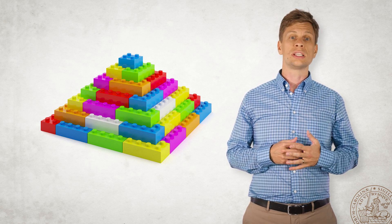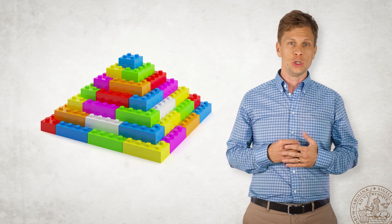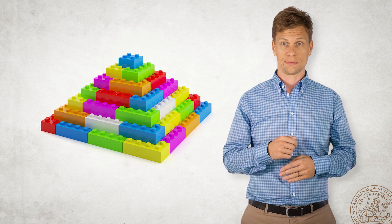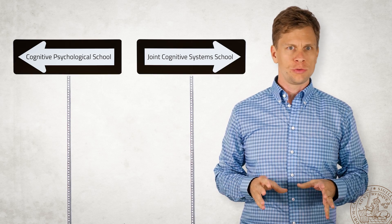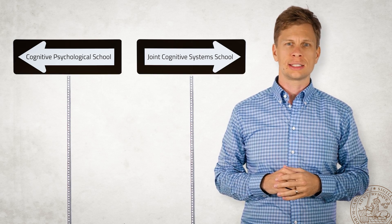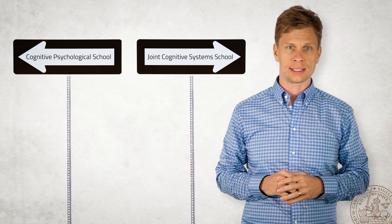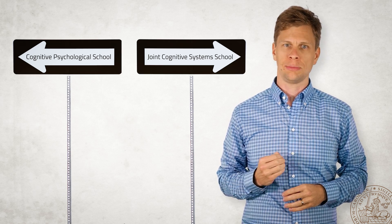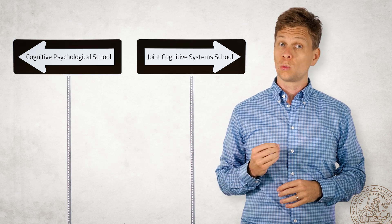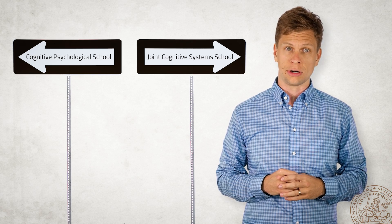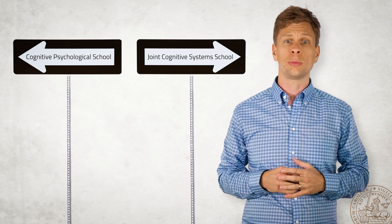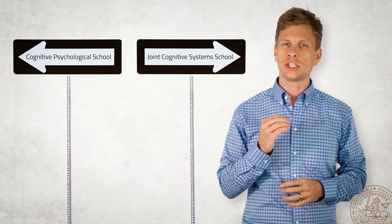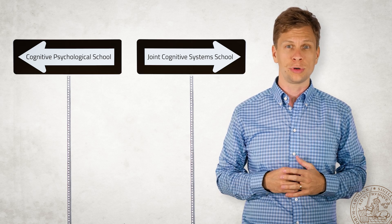Hollnagel even went so far as to proclaim that the notion of human error is an analytical dead end. Ultimately, how to view human error in the wake of an accident is not only an academic exercise — this analytical choice can have great implications. Depending on what story we tell about error, let us say an unintended harm to a patient during a surgical procedure, the two schools will suggest different means for system improvement.